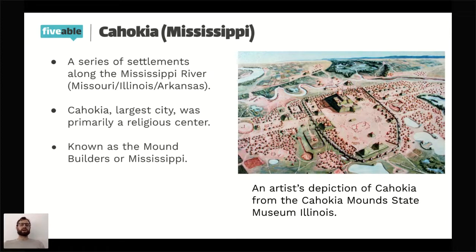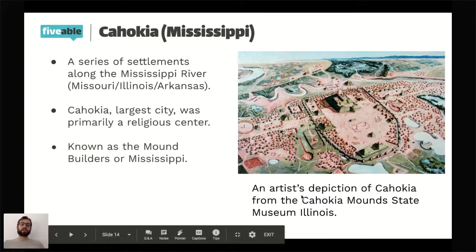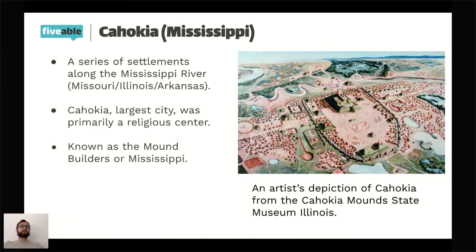The Cahokia are sometimes known as the mound builders because they created a number of very large mounds you can still see in the Mississippi region. The Cahokia Mound State Museum in Illinois is home to what's called the Monk's Mound, one of the largest ever built. While not as tall as the Pyramid of Giza, it does have the same base dimensions — as wide and as long as the Pyramid of Giza.